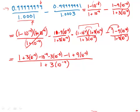Now we get some simplification. The ones cancel, so they go away. We have three times ten to the negative fourth minus ten to the negative fourth, which is two times ten to the negative fourth. We also have nine times ten to the negative eighth minus three times ten to the negative eighth, which is six times ten to the negative eighth.